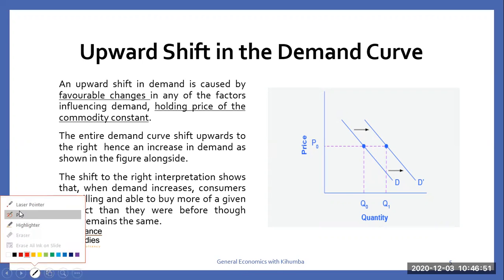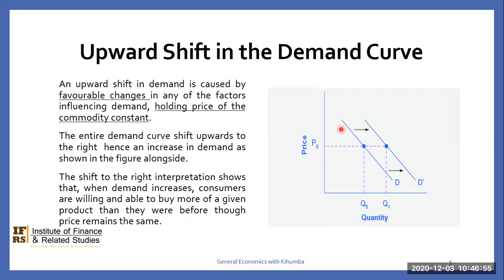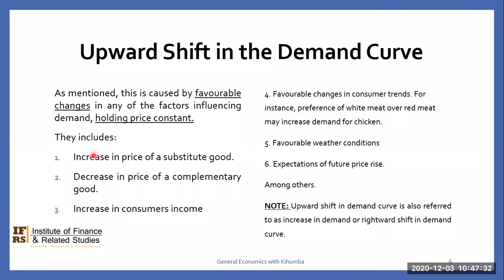Looking at the figure alongside, our original demand curve is D. But as a result of a favourable change in any of the factors that influence demand, we end up with the entire demand curve shifting to the right to D1. You notice, even though price remains the same, at P-not, quantity demanded has increased from Q-not to Q1. This is caused by favourable changes in any of the factors influencing demand, holding price constant.